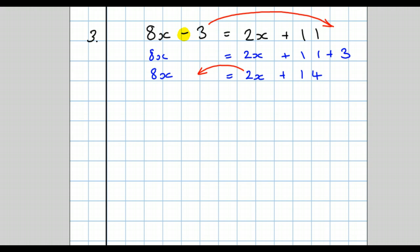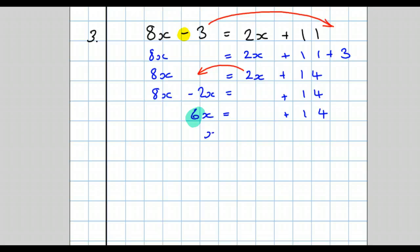Our next step is to move the x's together, so we get 8x minus 2x equals plus 14. Now tidy up and simplify the left-hand side: 8x take away 2x is 6x, so 6x equals plus 14. The final step — the coefficient in front of x is 6, so our answer is x equals plus 14 all over 6.